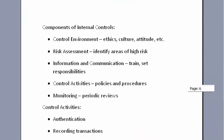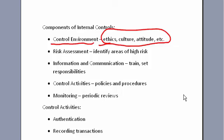The next major area is internal controls, which subdivide into many different areas — a very important concept of business. The first one your book discusses is the control environment: have you set up an ethical situation? Do your employees see other people stealing and the bosses know about it and nobody does anything? All of those issues come into play when safeguarding your assets and making sure that the numbers on your financial statements are correct.